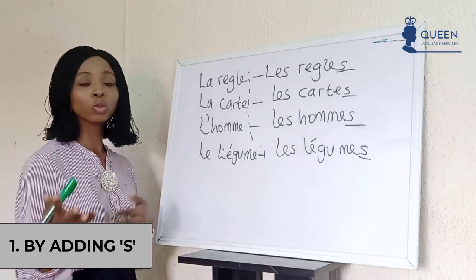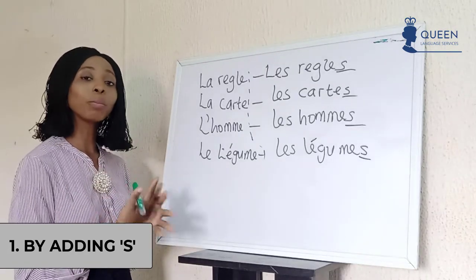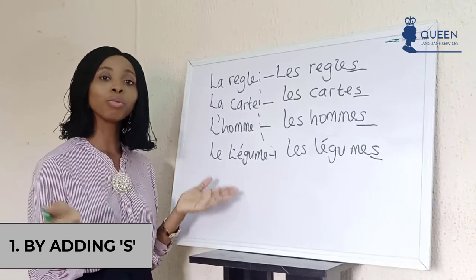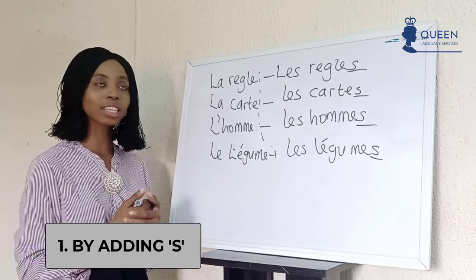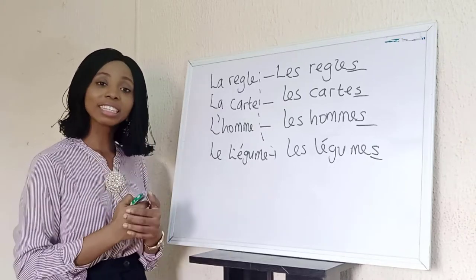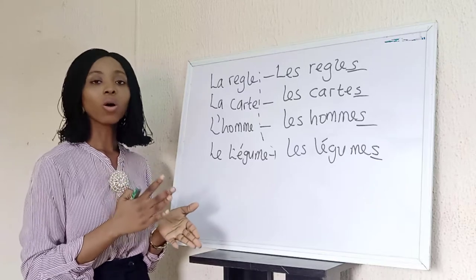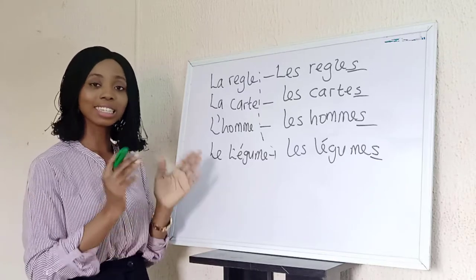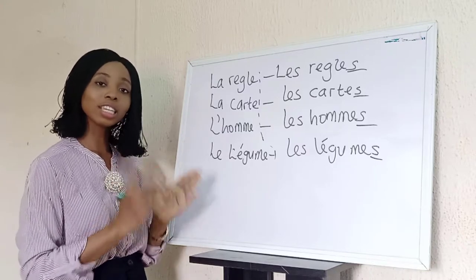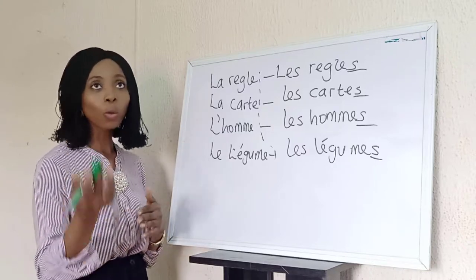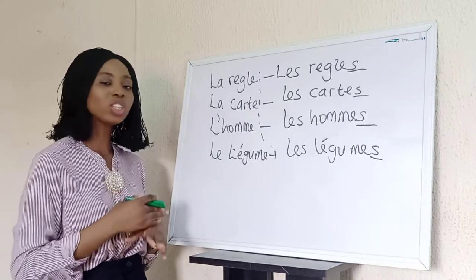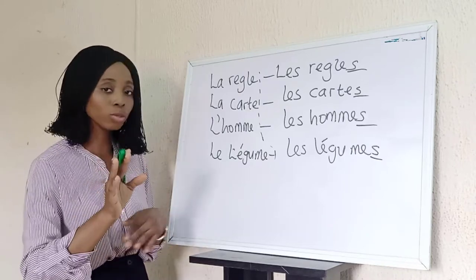We also have another way to detect plural forms in French: words or nouns that have -s, -x, and -z at the end of their singular form. When we want to have their plural form, they remain the same — they remain constant. We are not changing anything; we are not adding anything to these words.